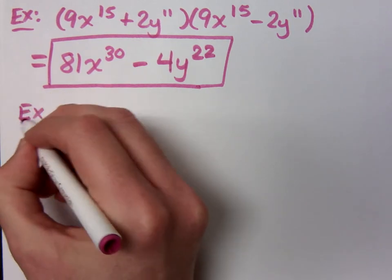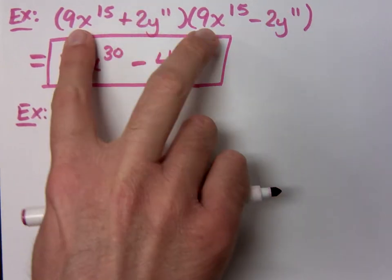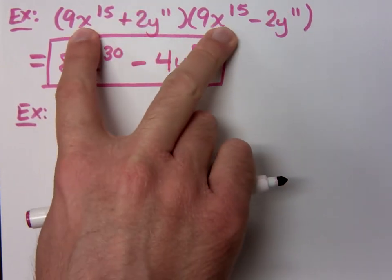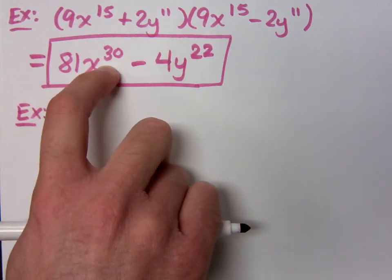So you add the exponents, not multiply. When you multiply these guys right here, what's x to the 15th times x to the 15th? How many factors of x would be there? 30 factors of x would be in that product.